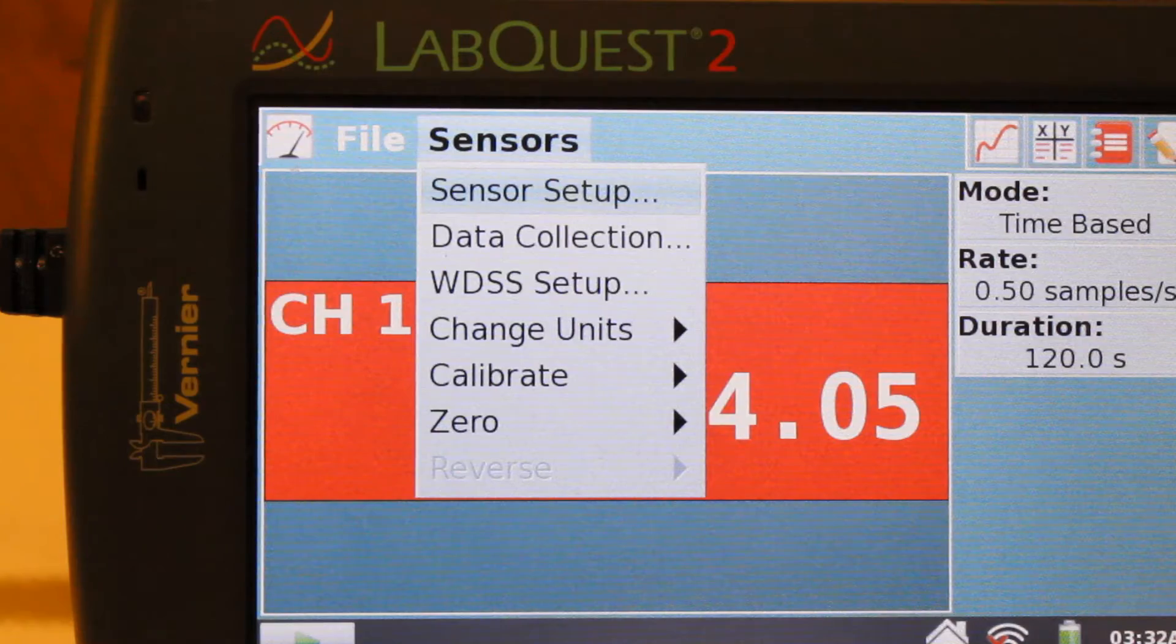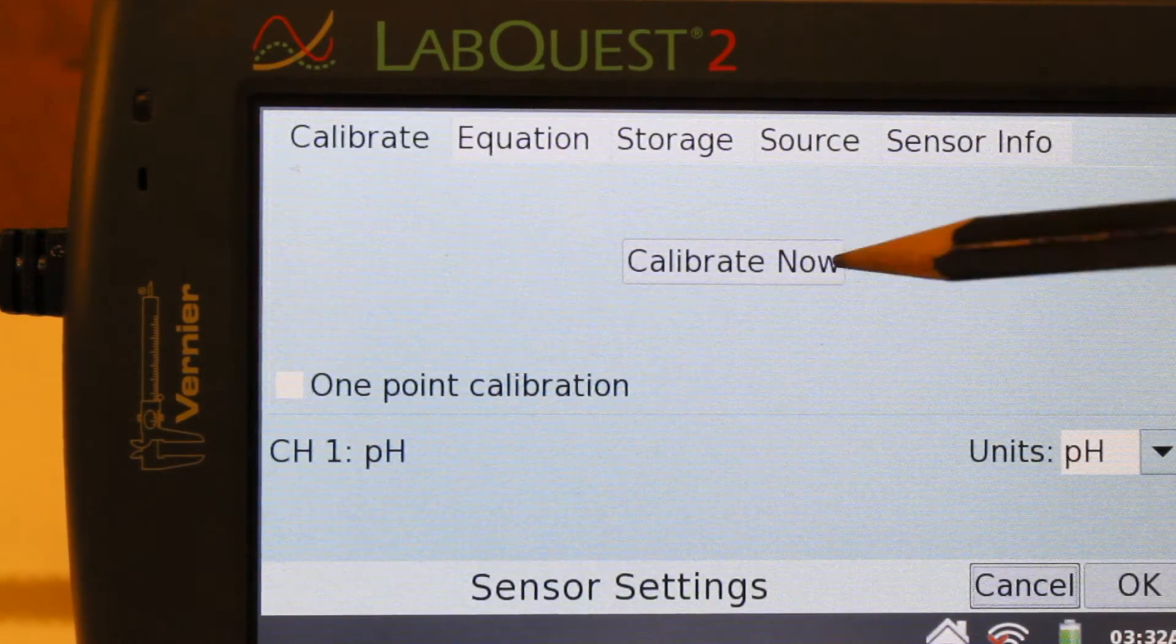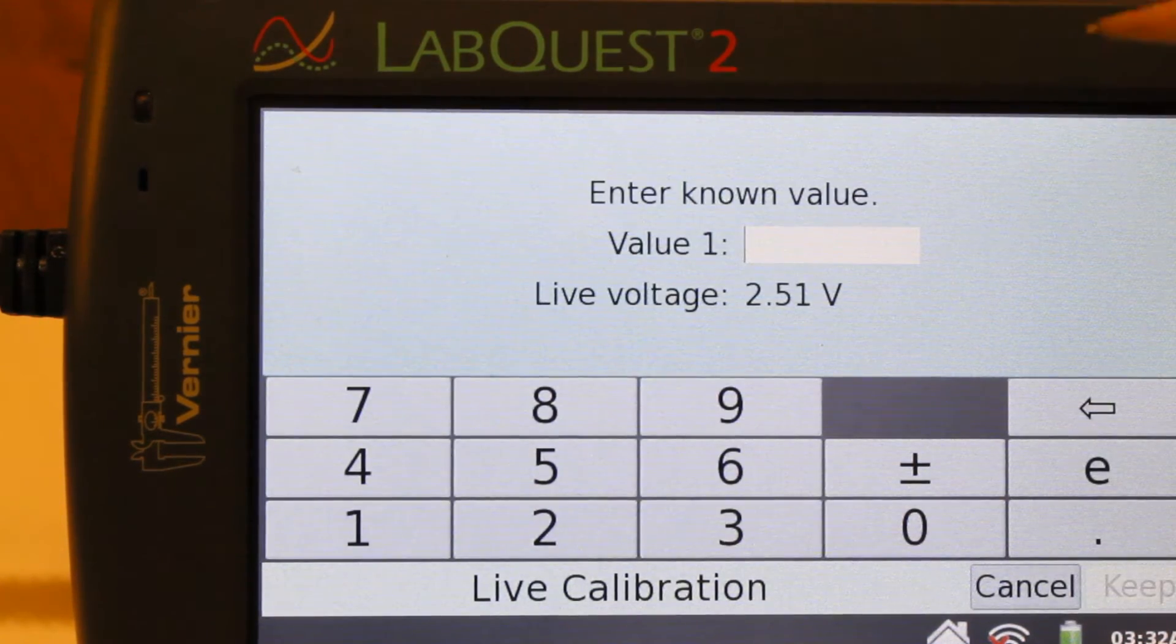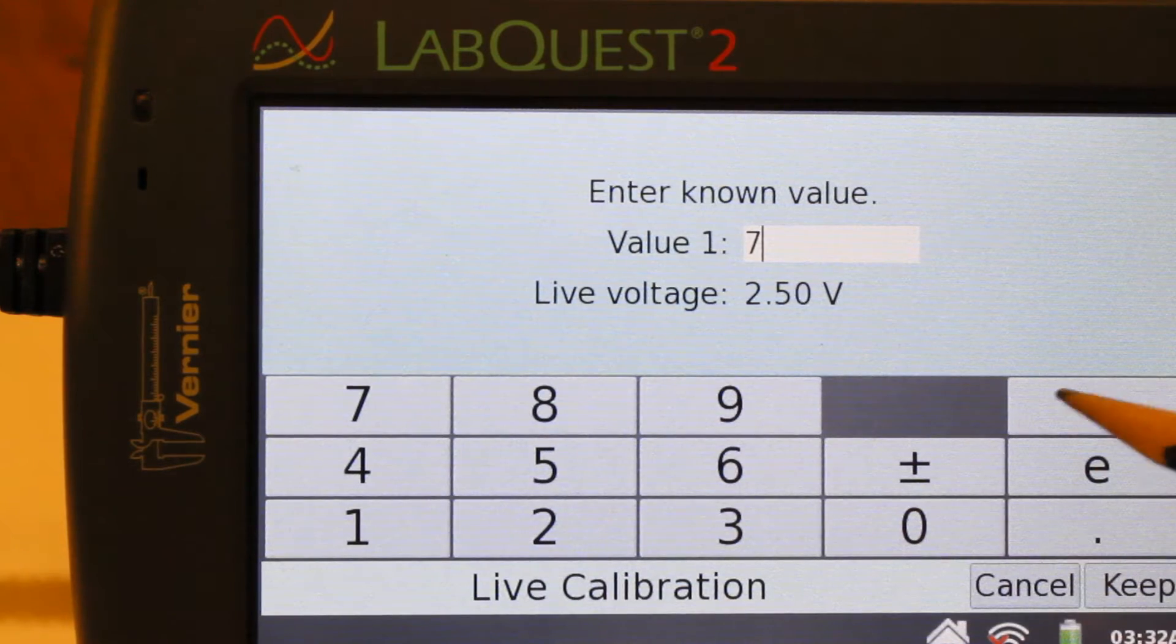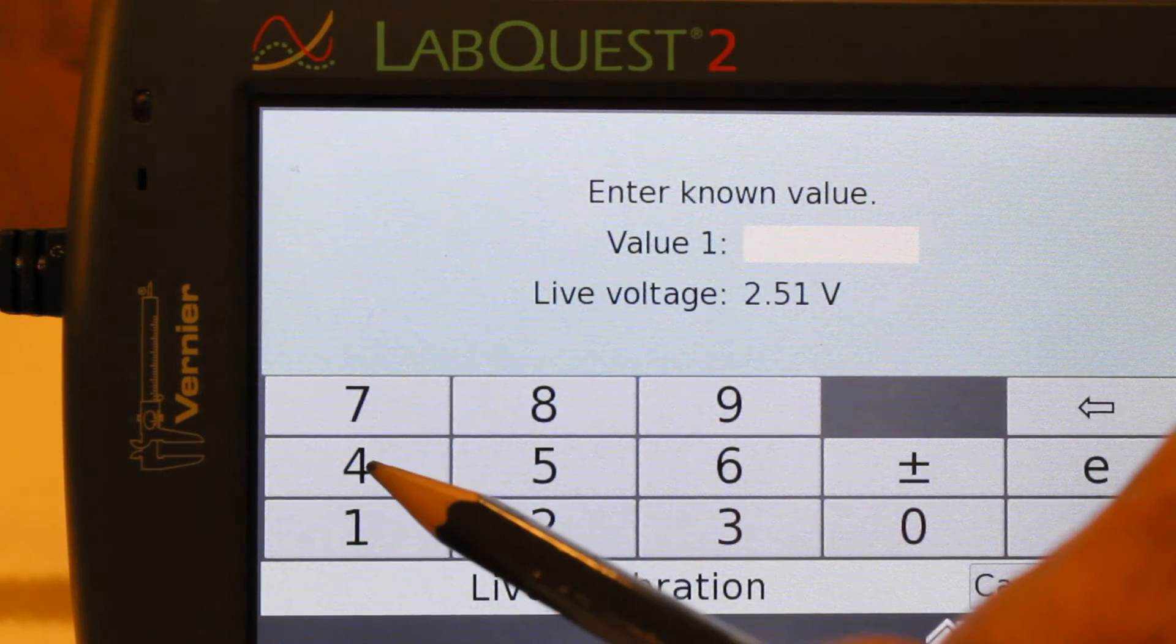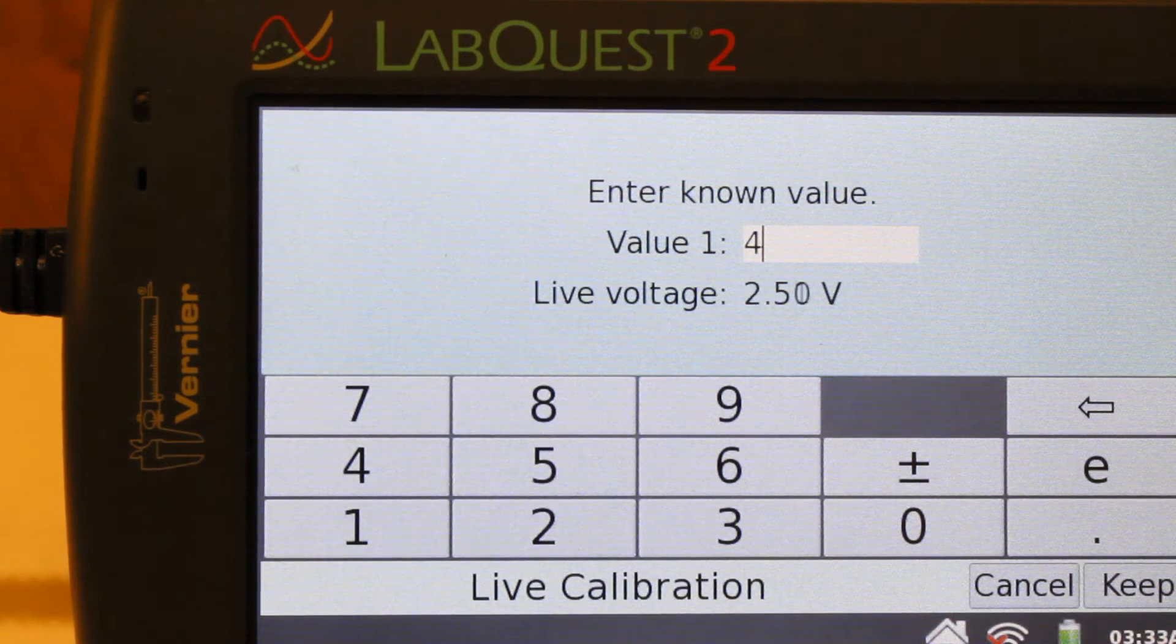Next, select sensor, calibrate, pH, followed by calibrate now. Now you should enter known value. This is the value of pH of the buffer solution, in this case it is 4. Select keep.